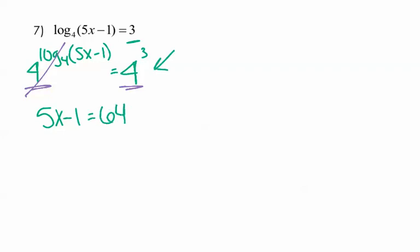So go ahead and add that 1. So 5x equals 65. And now x will equal 13. Don't forget to go ahead and plug that 13 in real quick. 13 times 5 is going to be 65. Minus 1 is going to be positive. So we're really just checking to see are we going to get any sort of negative numbers.